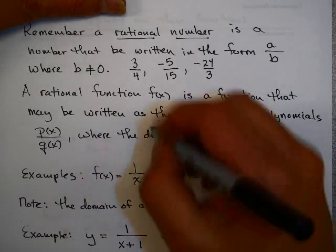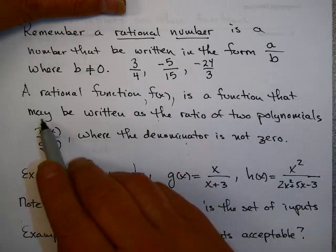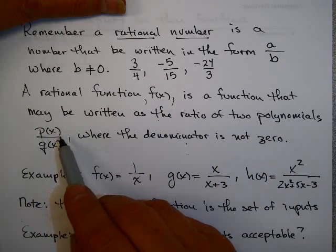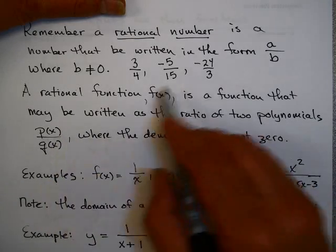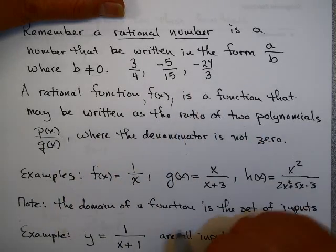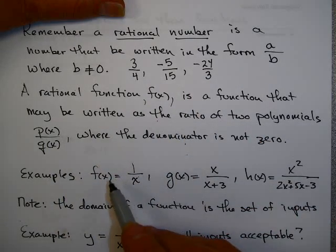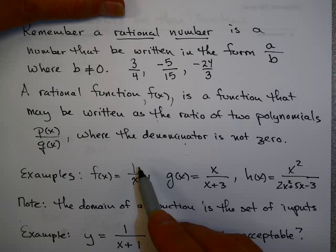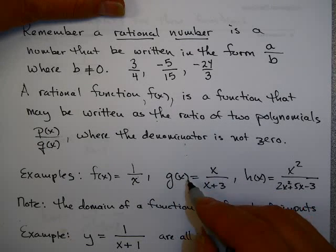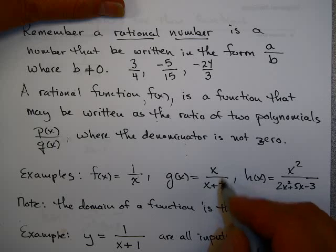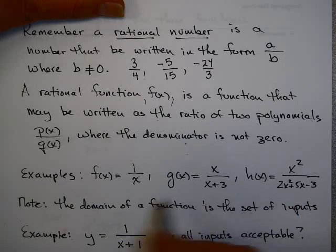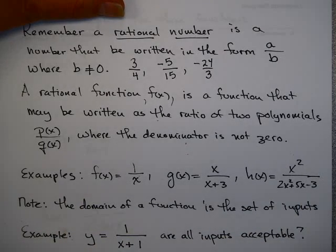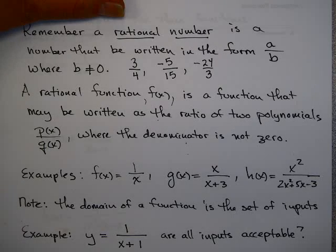A rational function f(x) is a function that may be written as the ratio of two polynomials — p(x) over q(x) — where the denominator is not 0. For example, f(x) = 1 over x, where 1 and x are both very simple polynomials. Also g(x) = x over x plus 3, and h(x) = x squared over 2x squared plus 5x minus 3. All of these are examples of rational functions — this is a new type of function important as you progress in algebra.